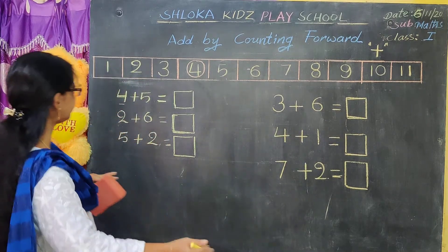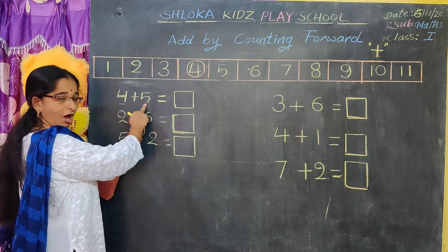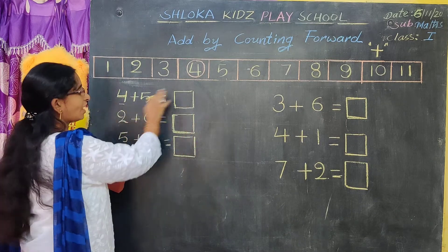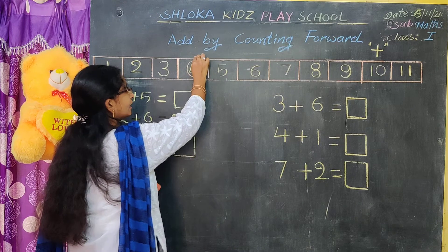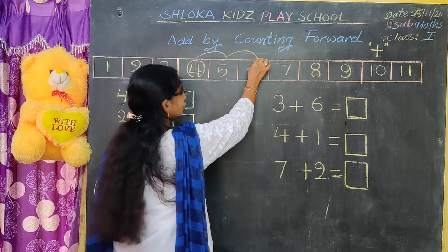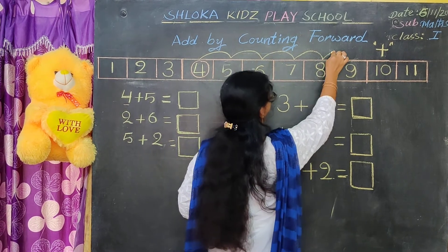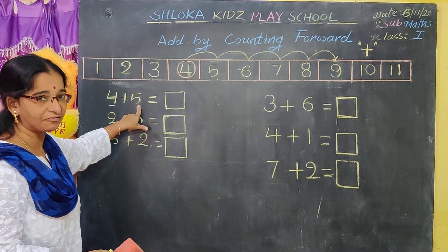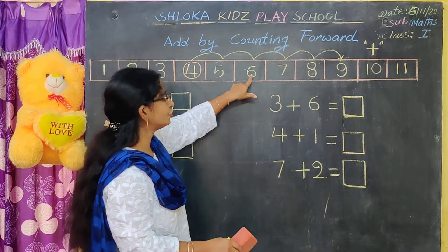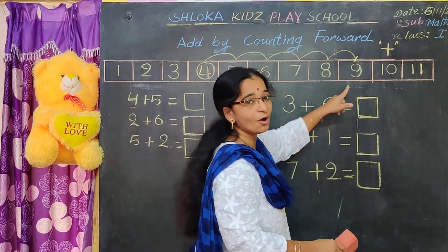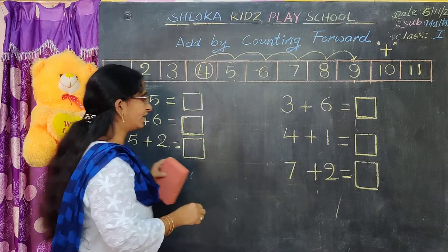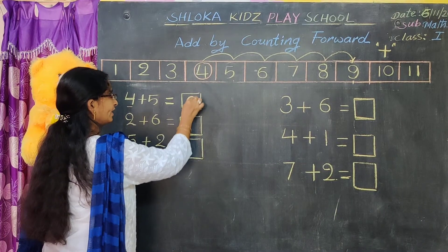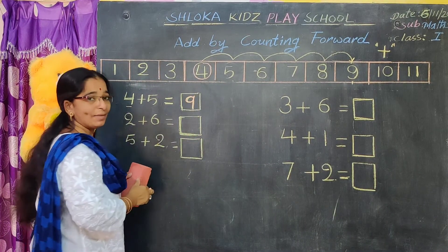Now what you have to do? How much is here? Five. So we have to jump five numbers from four onwards. How can you jump? One, two, three, four, five. How many numbers we have to jump? Five numbers. Count after four: one, two, three, four, five. All together how much we got? The answer is nine.